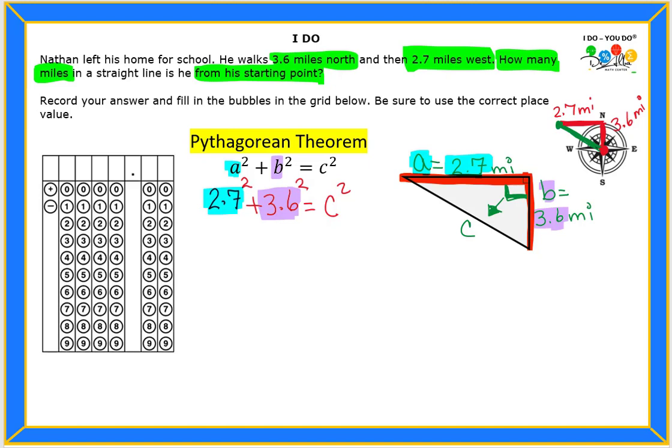So let's go ahead and put that in the calculator for 2.7 to the second power. And you guys will get something like 7.29 plus 3.6 to the second power. It's 12.96. That's equals to C squared. So if you add them up, you get 20.25 equals C squared.